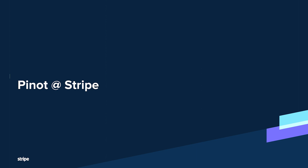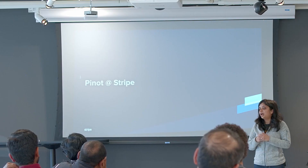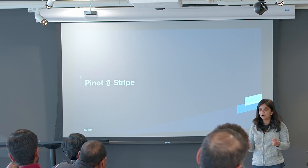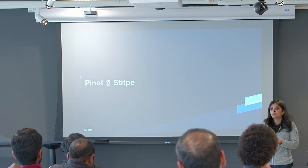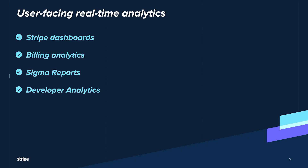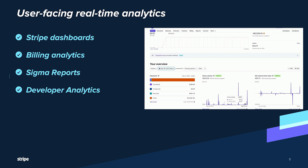So where does Pinot fit into Stripe's wide suite of FinTech products? Financial data, specifically transactions data, is real-time in nature, and we want to empower our users with fast, accurate, and fresh data about their transactions so they can make informed decisions for their businesses. We actually power a number of user-facing interactions with Pinot today. If you log into your Stripe account, the home page with an overview of your business's financial health — the payment widget showing how many payments succeeded or failed — is powered by Pinot.